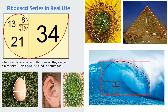When we make squares with the widths in the series, we get a beautiful spiral. This is called the Fibonacci spiral. This spiral is found in nature, art, architecture, and many more. Here are a few for you to see.